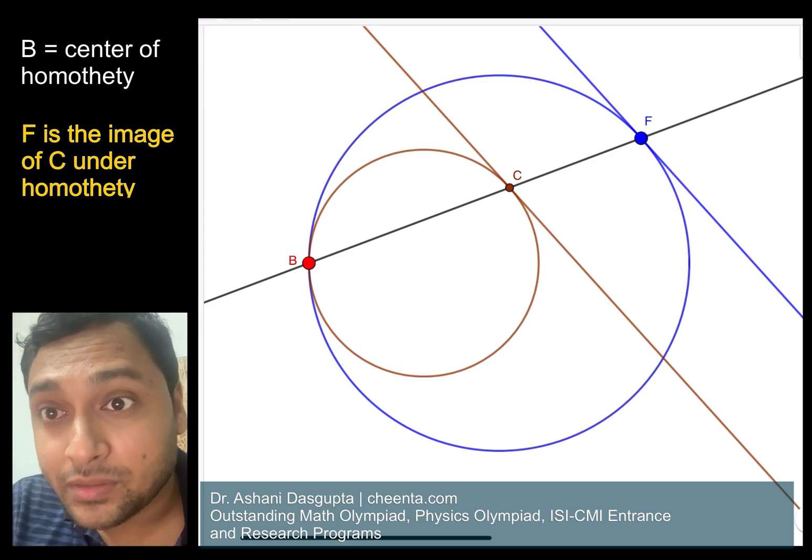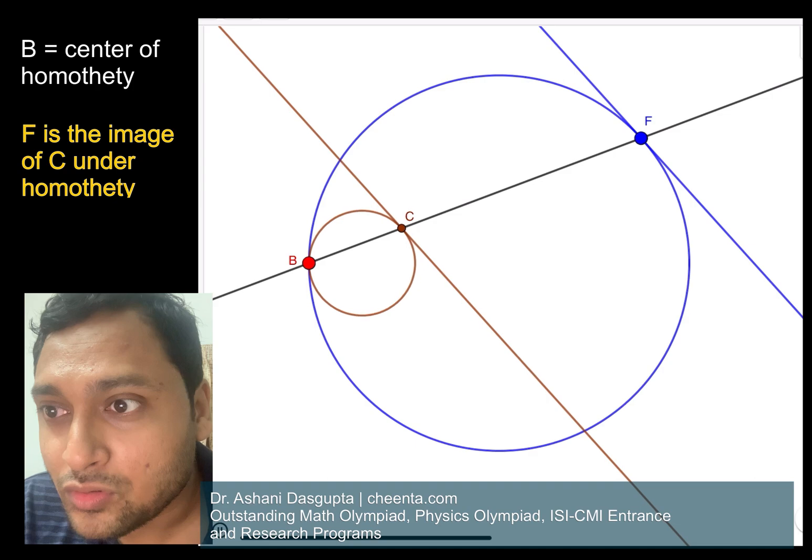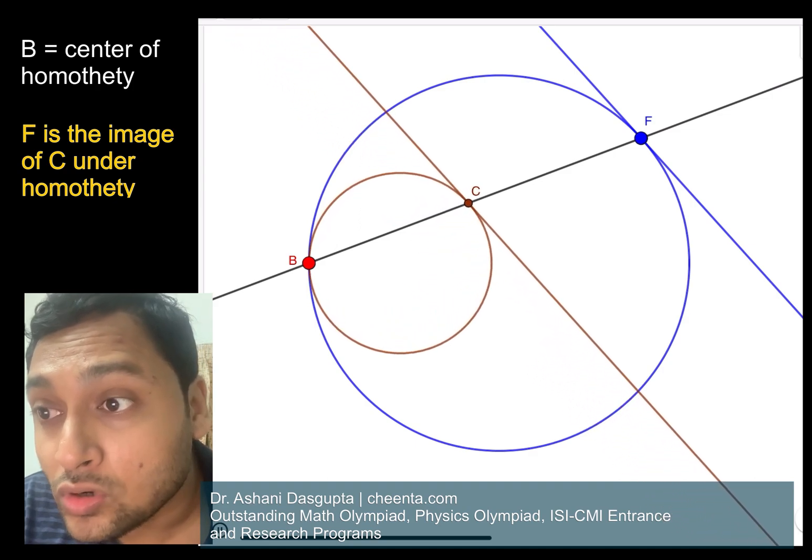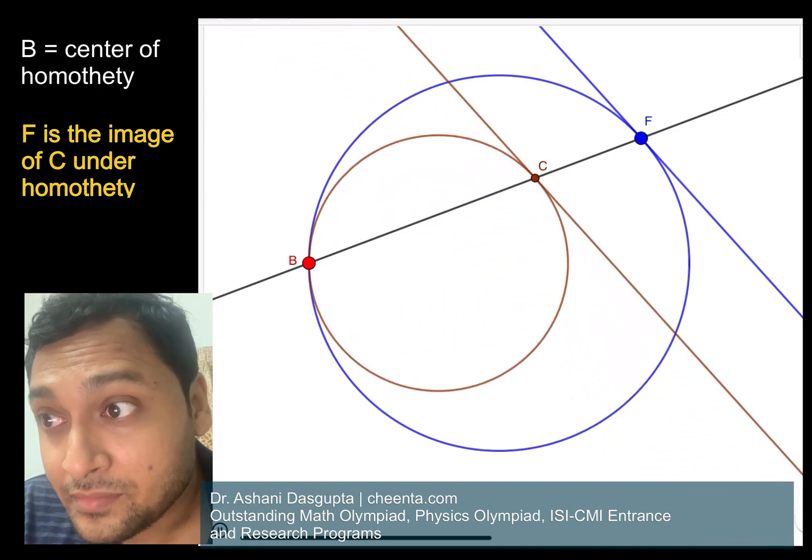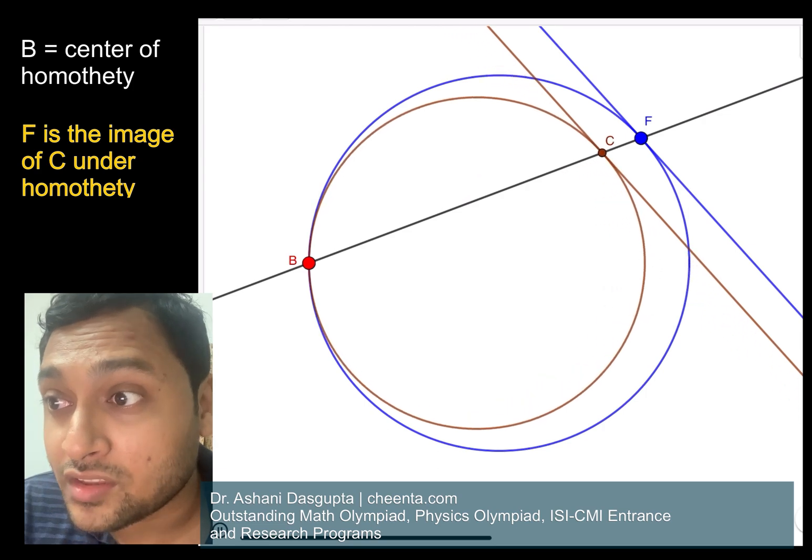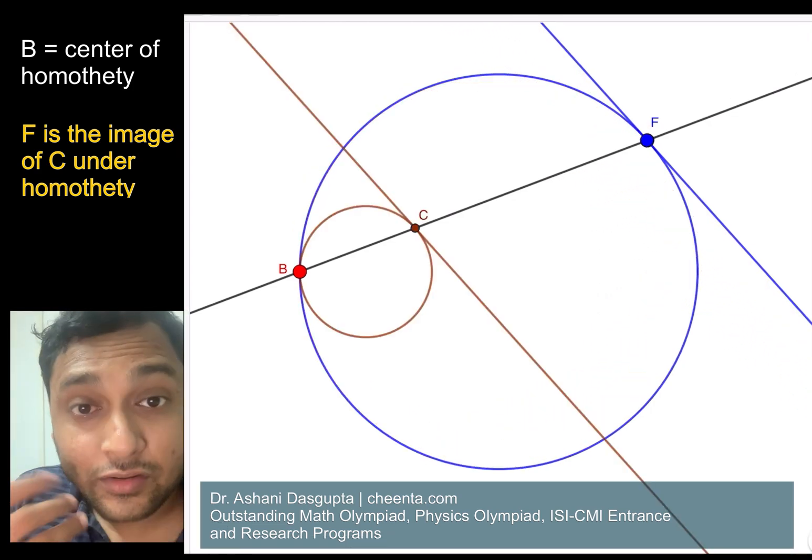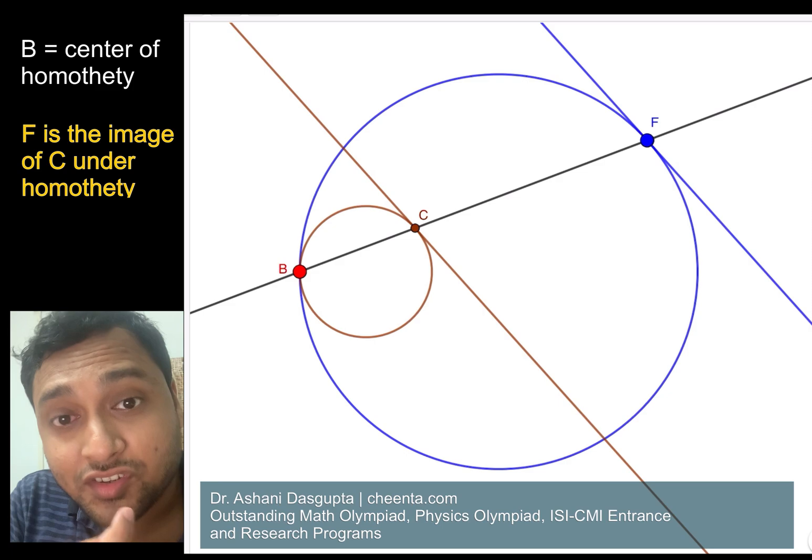Look at how the tangent on the golden circle becomes the tangent on the blue circle. And to get the point of tangency, you just join B and C and extend it to meet the blue circle at some point, and that point is F.